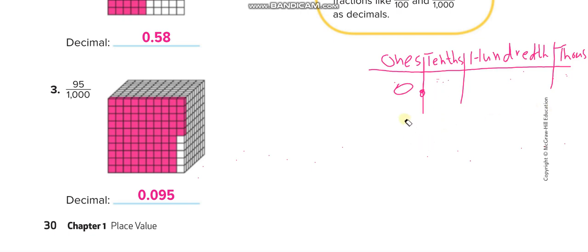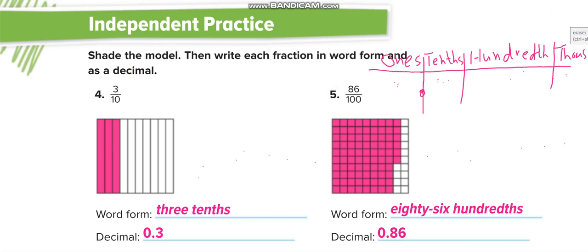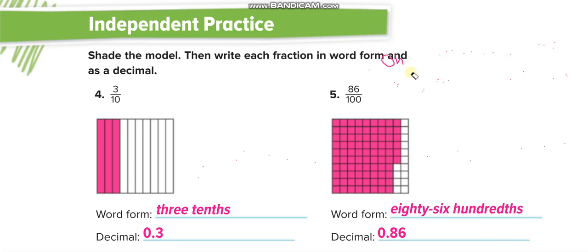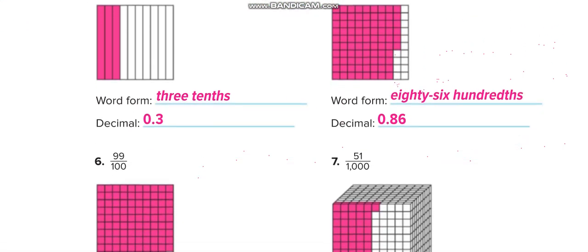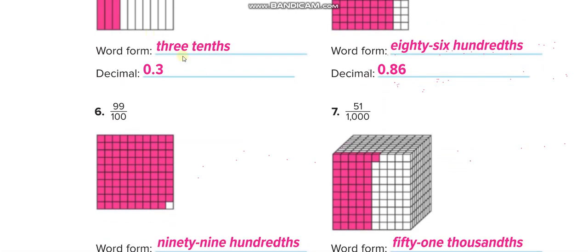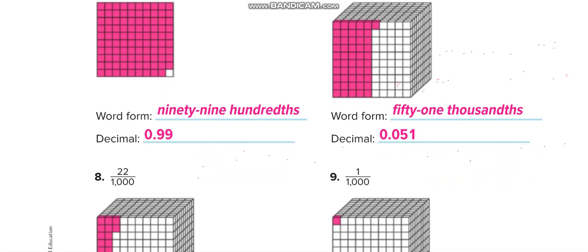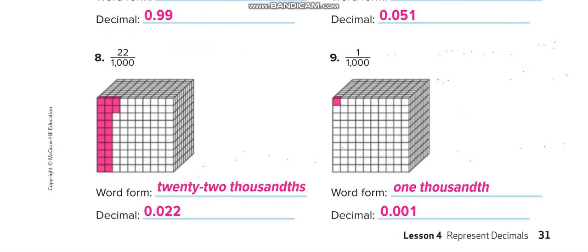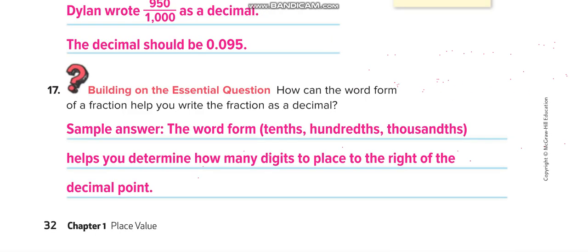Let me erase the numbers and move to the next page — page number 31. This is independent practice. You have to solve these six questions by yourself: write the word form and decimal for each. Then check your answers from this video. Next page is page number 32.